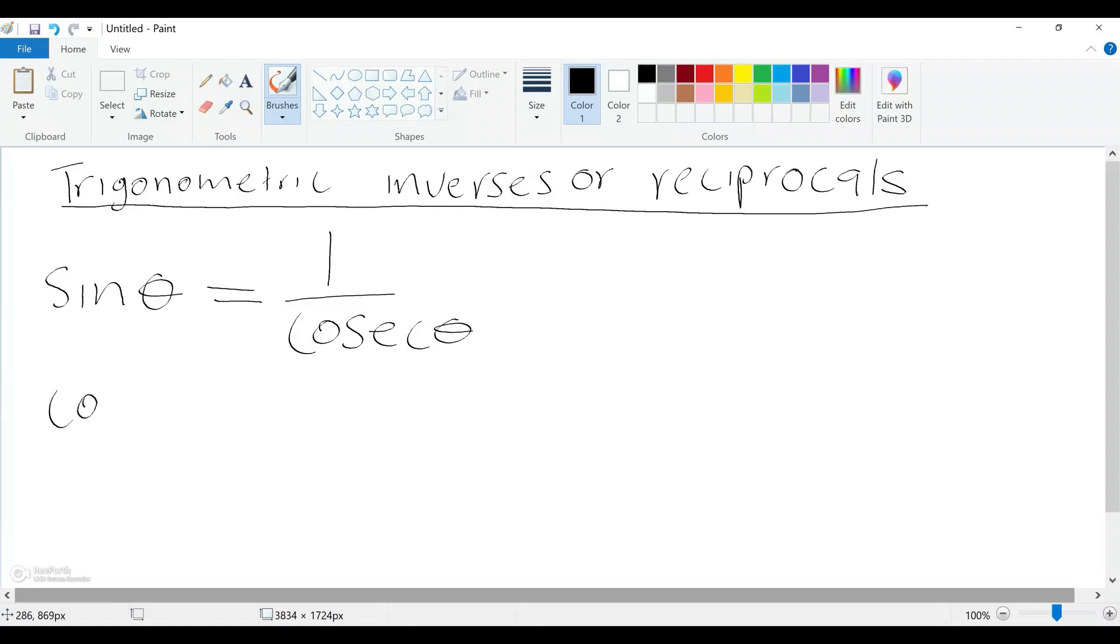And then we have the reciprocal or the inverse of cos, which is going to be one over sec. Now this is the reciprocal of cos, and then the inverse of tan is going to be one over cot. Right, so these are the reciprocals of the trigonometric functions that we did on part one.